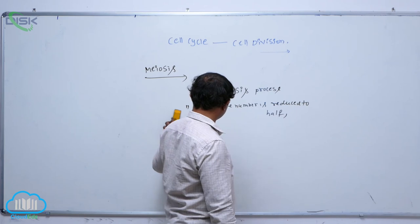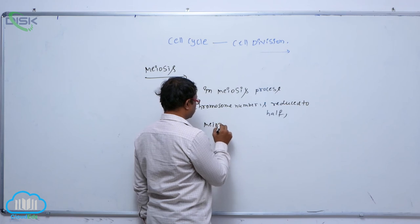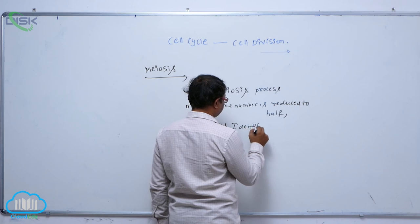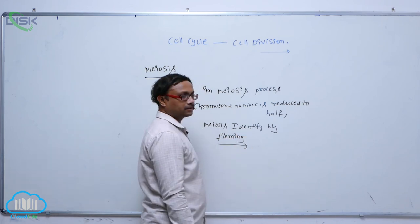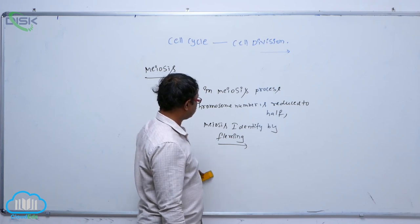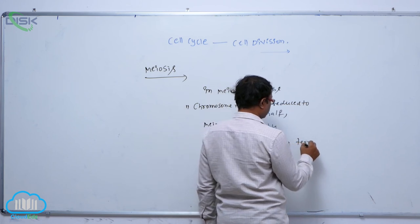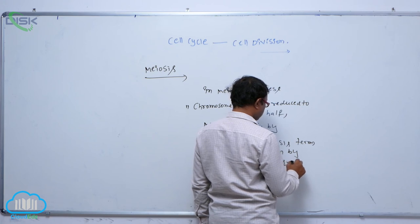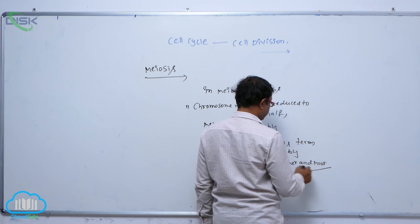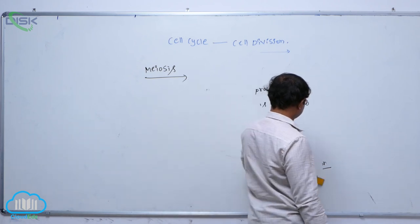Meiosis was identified by the scientist Fleming. The term meiosis was coined by Farmer and Moore scientists.